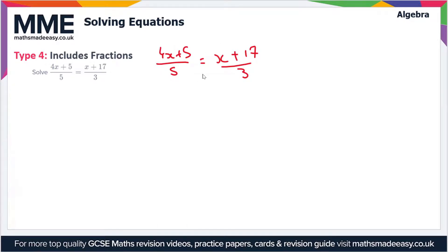To do that, we need to change these from fractions into normal expressions. The way we do that is we multiply by 5 on both sides and multiply by 3 on both sides — that is, we multiply both sides of the equation by the denominators of each fraction.